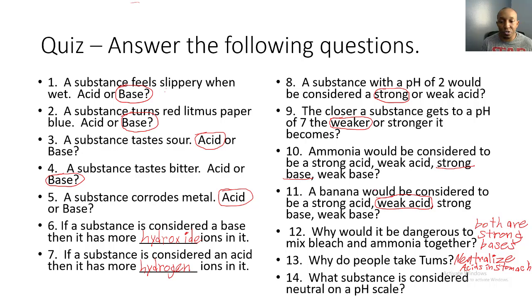Number 11: a banana is a very weak acid because it sits at around a pH of 5. Number 12: it's dangerous to mix bleach and ammonia because both are very strong bases. Number 13: people take Tums to neutralize the strong gastric acid in their stomachs, which has a pH of about 2, making it less acidic — especially helpful for those with acid reflux. Number 14: the substance considered neutral on the pH scale is water.